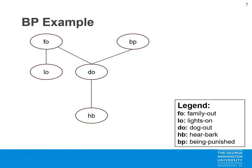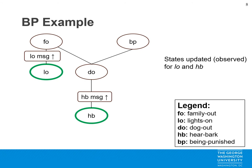I'll provide an example of belief propagation with the following example — a slightly tweaked version of the family outprop. A family has a house with a dog and outdoor lights. Sometimes the dog is being punished and sometimes the family puts the dog outside, and lastly sometimes we can hear the dog barking. Next, we observe that the lights are on and we can hear the dog barking.